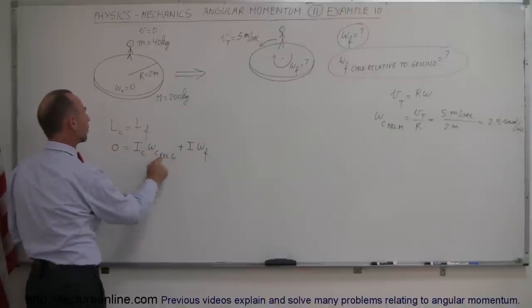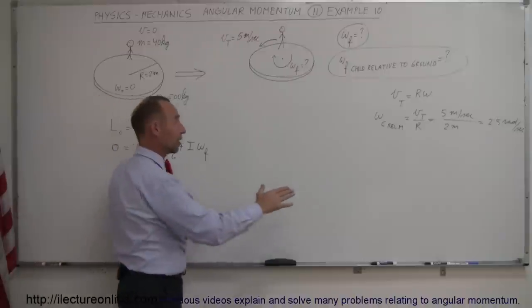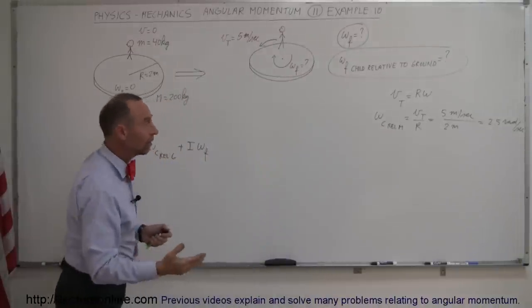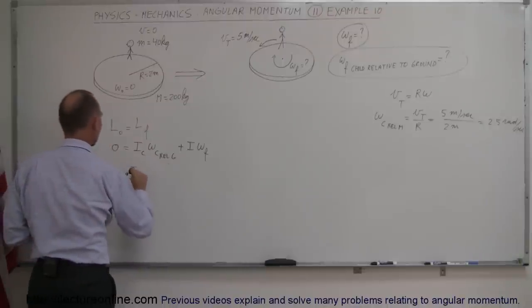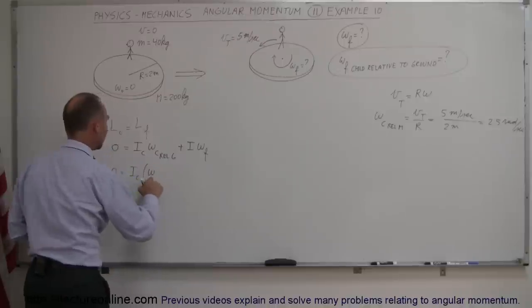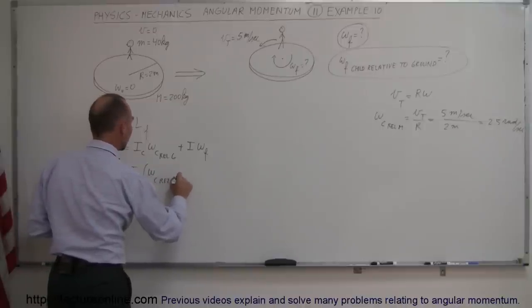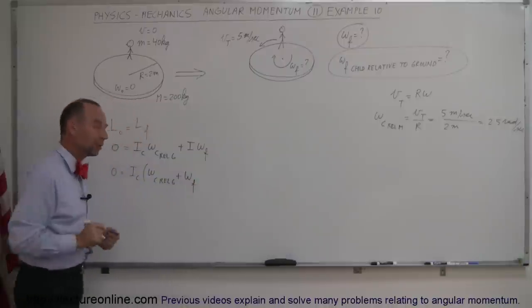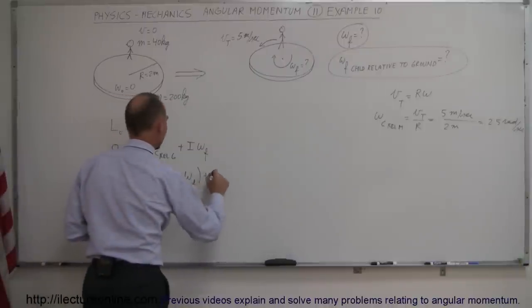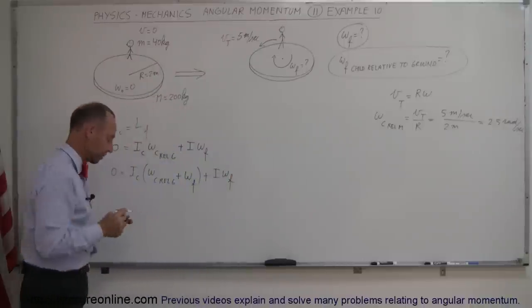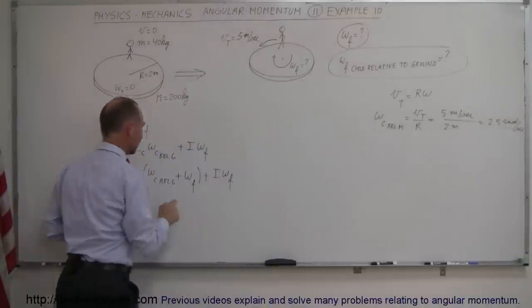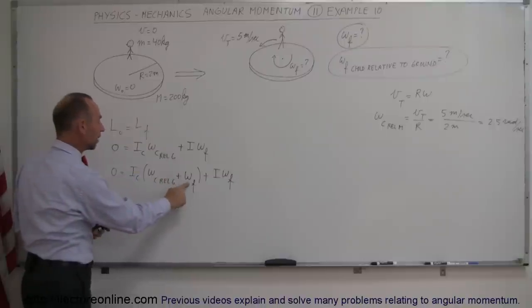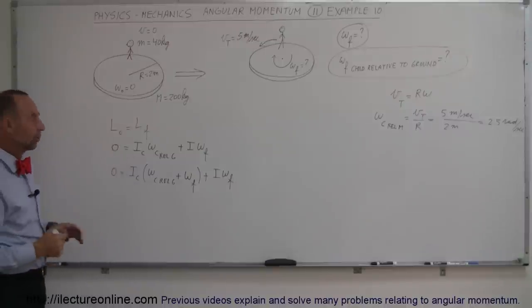What is the angular velocity of the child relative to the ground? We take the angular velocity of the child relative to the merry-go-round and add to that the angular velocity of the merry-go-round to get the net velocity of the child relative to the ground. Since the merry-go-round is expected to rotate in the opposite direction, its angular velocity will be negative — clockwise — but the sign will take care of itself.